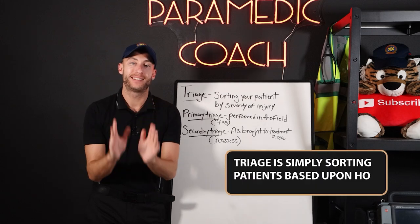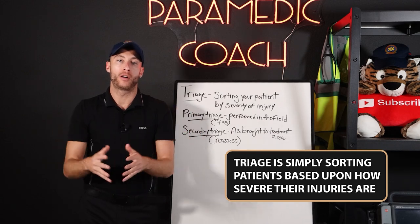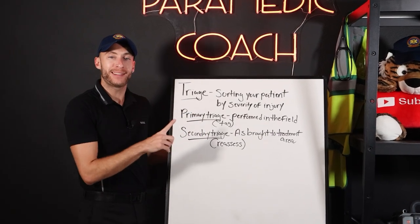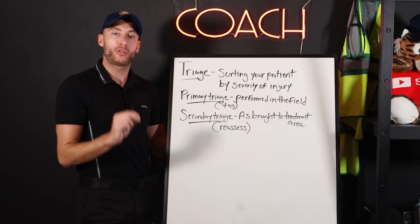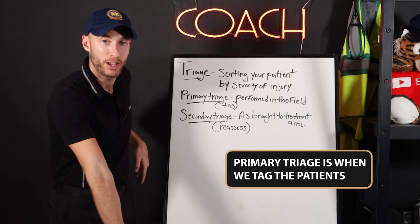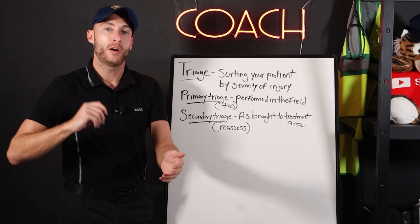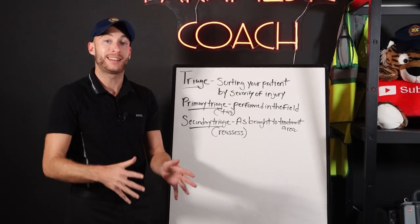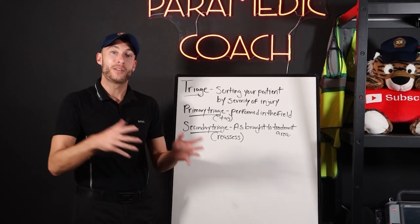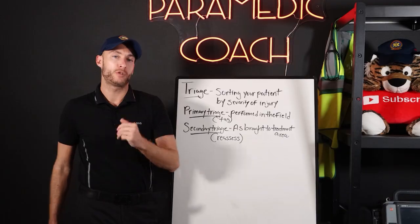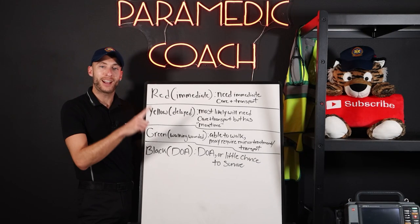Triage is simply sorting patients based upon how severe their injuries are. We have primary and secondary triage — these are key terms you need to know. Primary triage is when we tag the patient. When we first approach the patient, we do a quick exam and tag them. Then later, when they make it to the treatment area, we reassess and do a secondary triage.